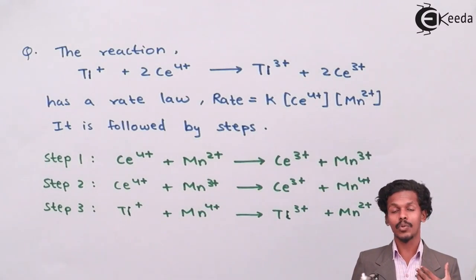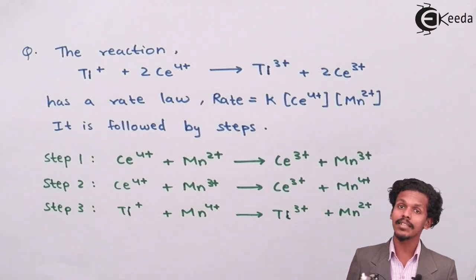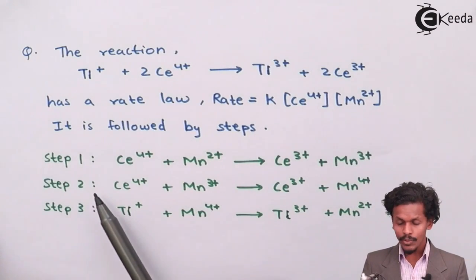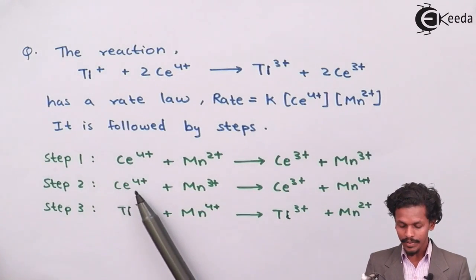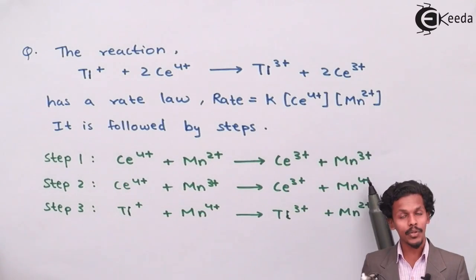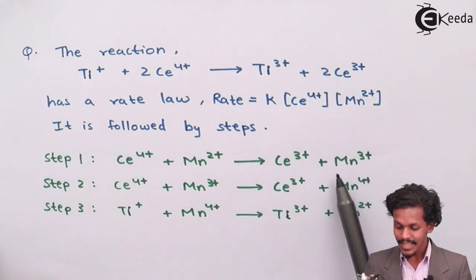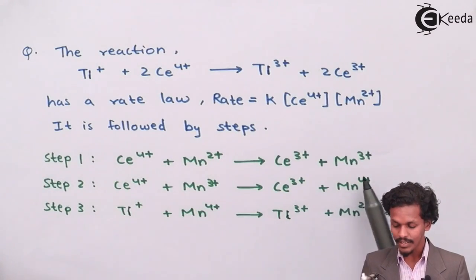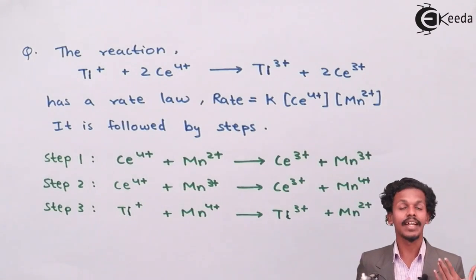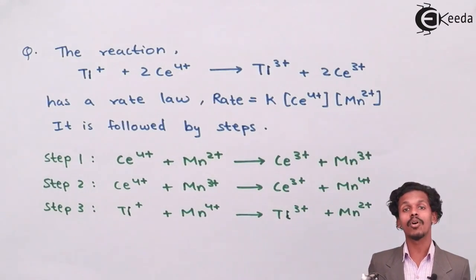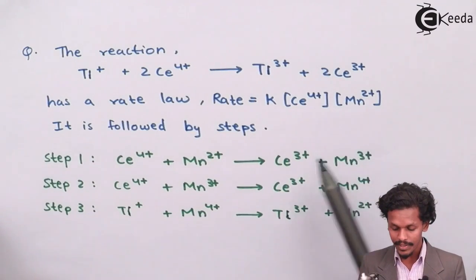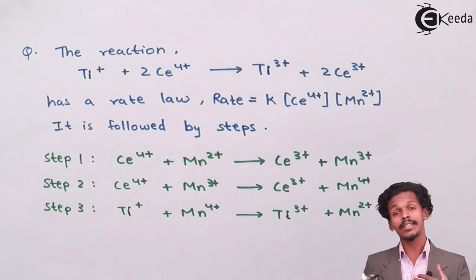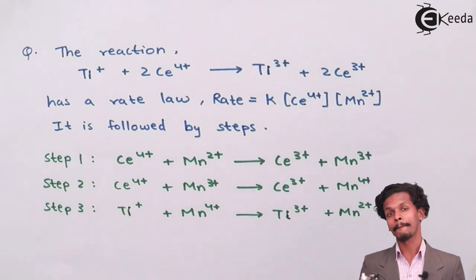Are there any other reaction intermediates? In step two, Mn(4+) is produced, and in step three, Mn(4+) is consumed. Therefore Mn(4+) is also a reaction intermediate. So we have two reaction intermediates: Mn(3+) and Mn(4+).